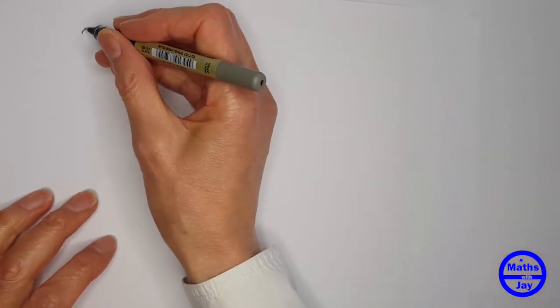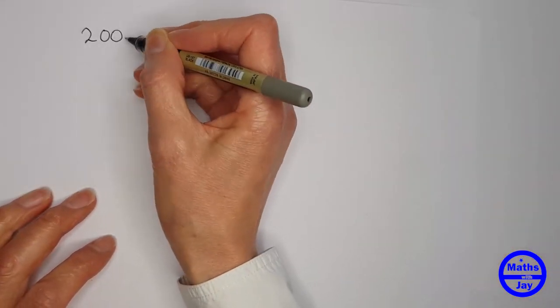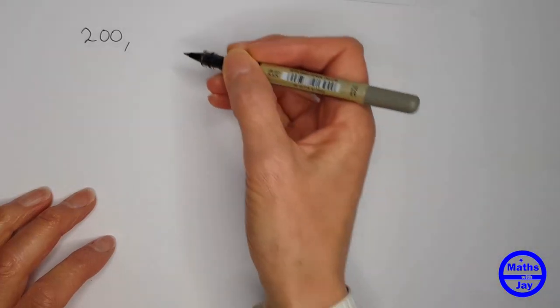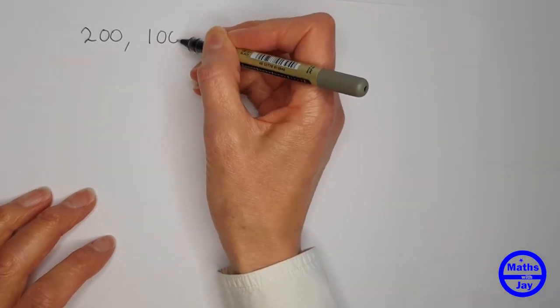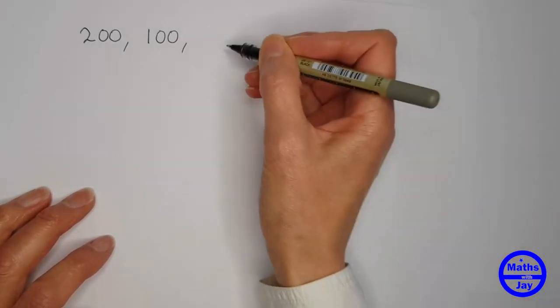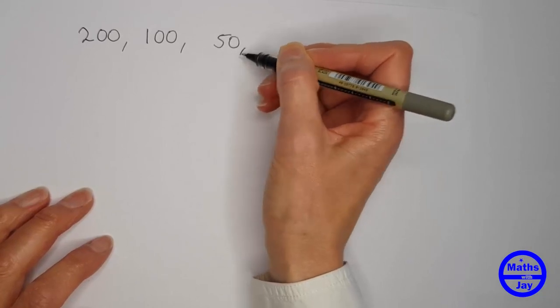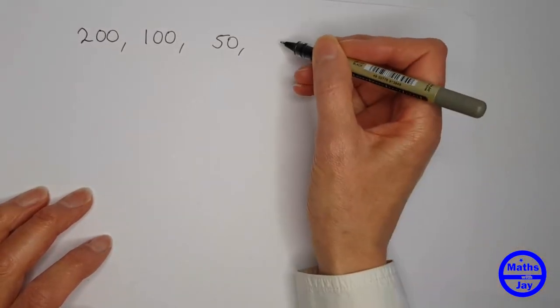We want to write down the nth term in this sequence. So we've got 200, 100, 50 and 25.